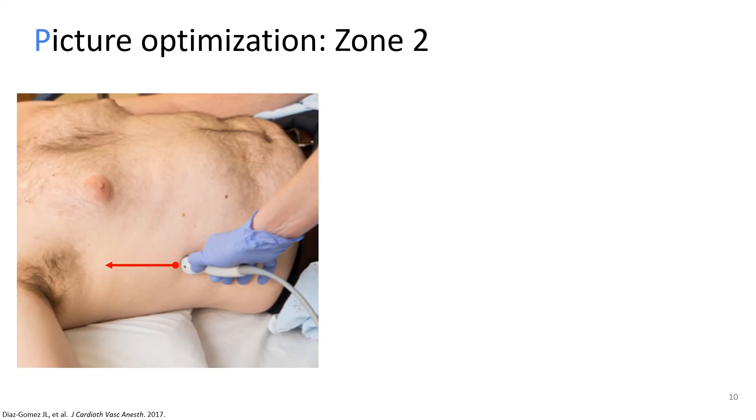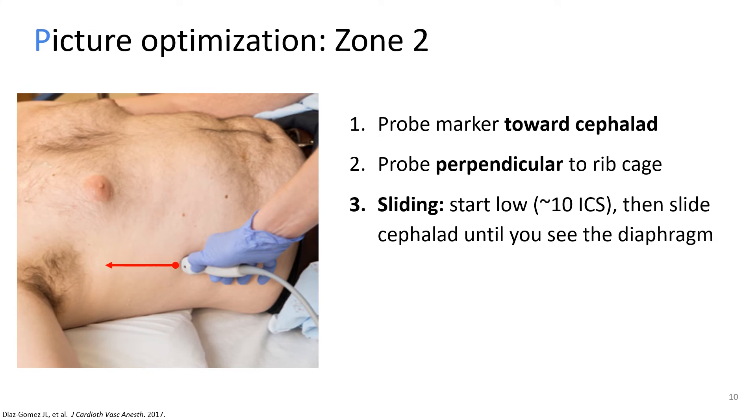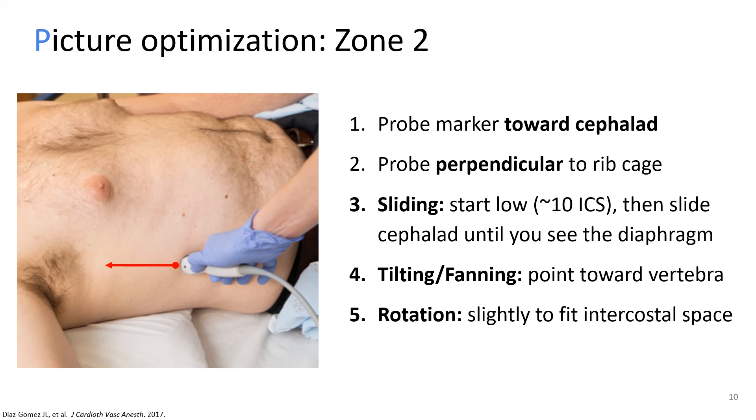For zone two, the first two steps are the same as previously described. The probe marker should point towards cephalad or 12 o'clock, and it should be perpendicular to the rib cage or chest wall. Then you should start scanning lower at around the 10th intercostal space, and then slide cephalad until you see the diaphragm. Next, you can tilt or fan your probe such that you direct the ultrasound beam towards the patient's back, thus scanning over the posterior area of the costophrenic angle where pleural fluid will accumulate. And finally, you can rotate your probe a little bit to improve your view, since the ribs over zone two will have a diagonal orientation. You're just trying to sneak in between these two ribs to see what's inside.